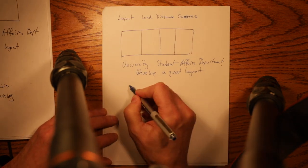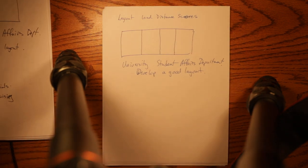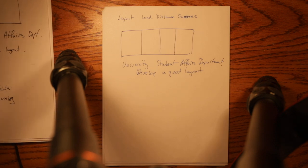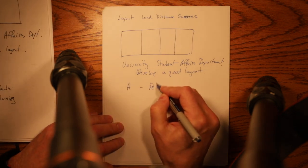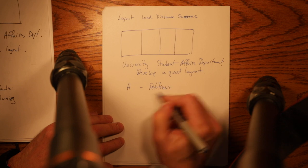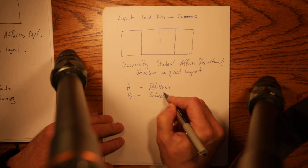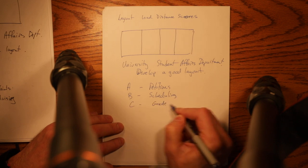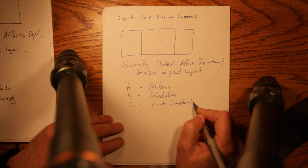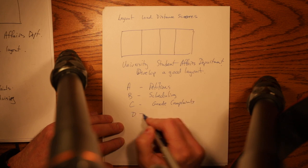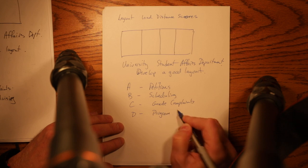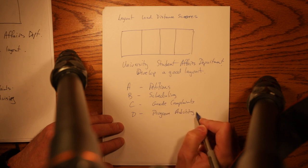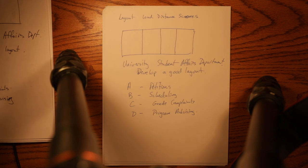So we have four sub departments in there, the first being petitions, the second being scheduling, the third being grade complaints, and the fourth being program advising. I'm going to take a quick break here just to check that everything is still on the screen and it looks like it is legible. So we'll continue.